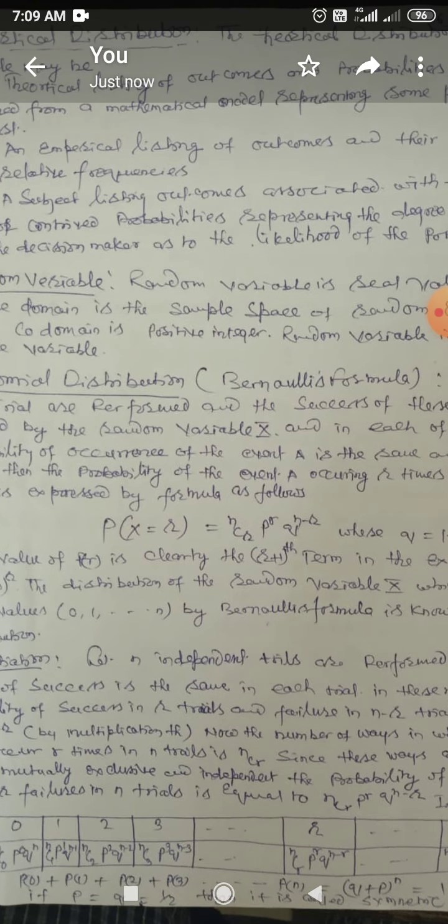The formula can be written as P(X = R) = NCR × P^R × Q^(N-R), where C is the combination and the expansion of NCR is equal to N factorial upon R factorial into N minus R factorial.